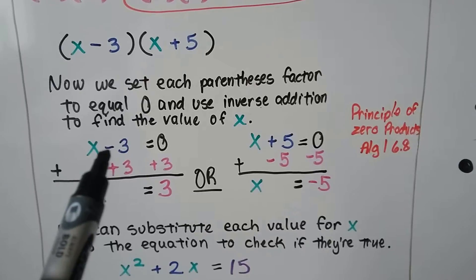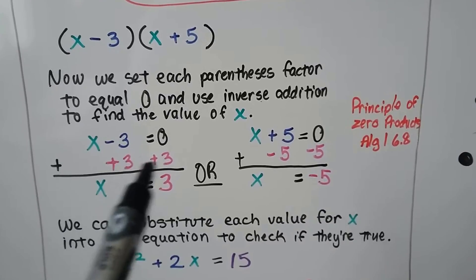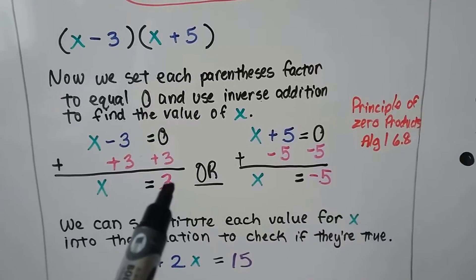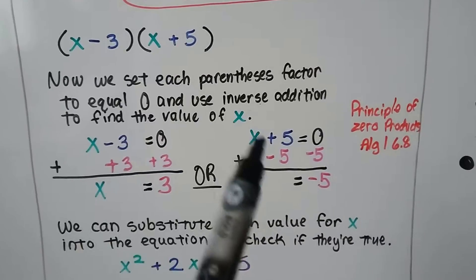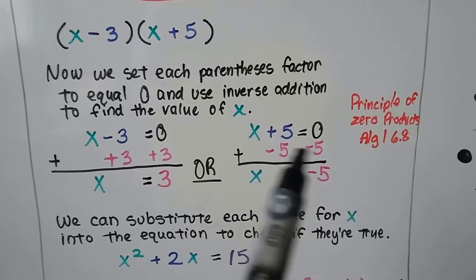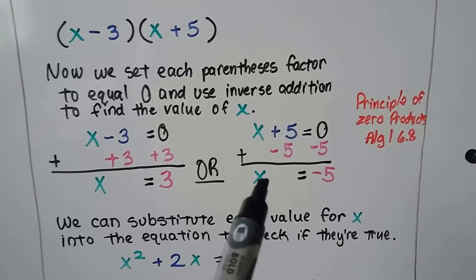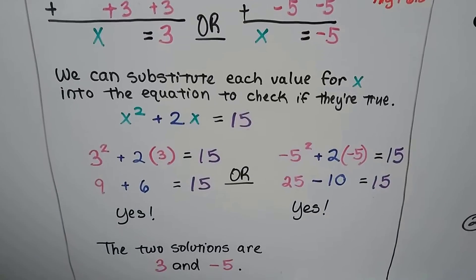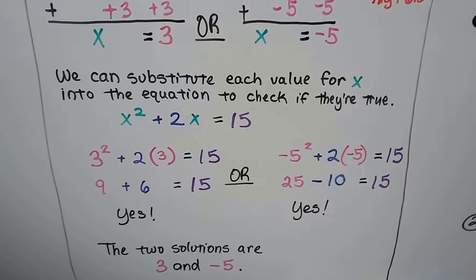So if we have a minus 3 here, we're going to add a positive 3 to each side of the equal sign so that we can isolate x as a 3. For the plus 5, we're going to subtract 5, or you could say add a negative 5, to each side of the equal sign so we isolate x as a negative 5. Now we can substitute each value for x into the equation to check if they're true.